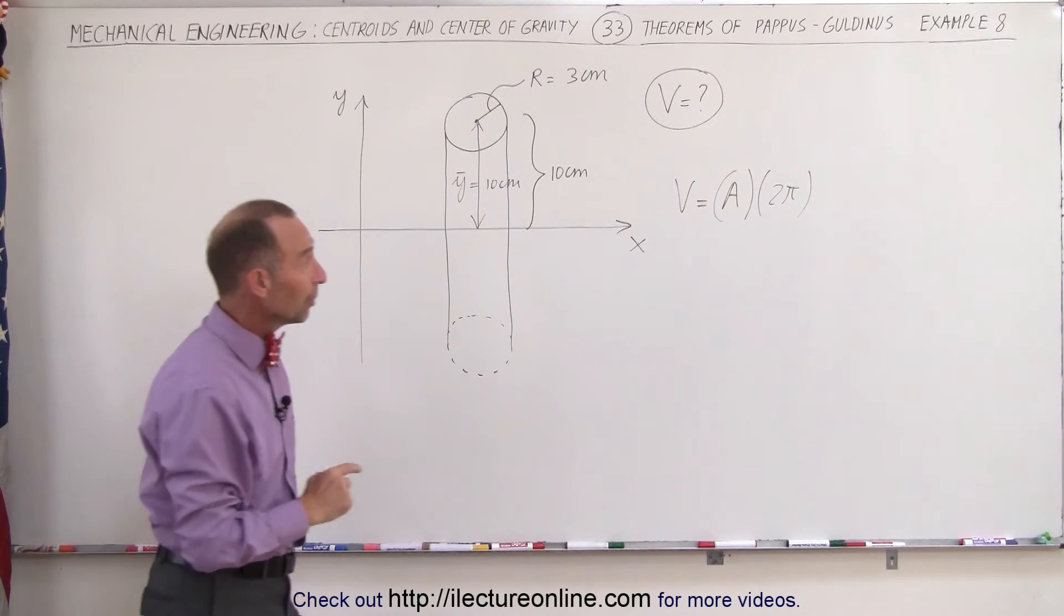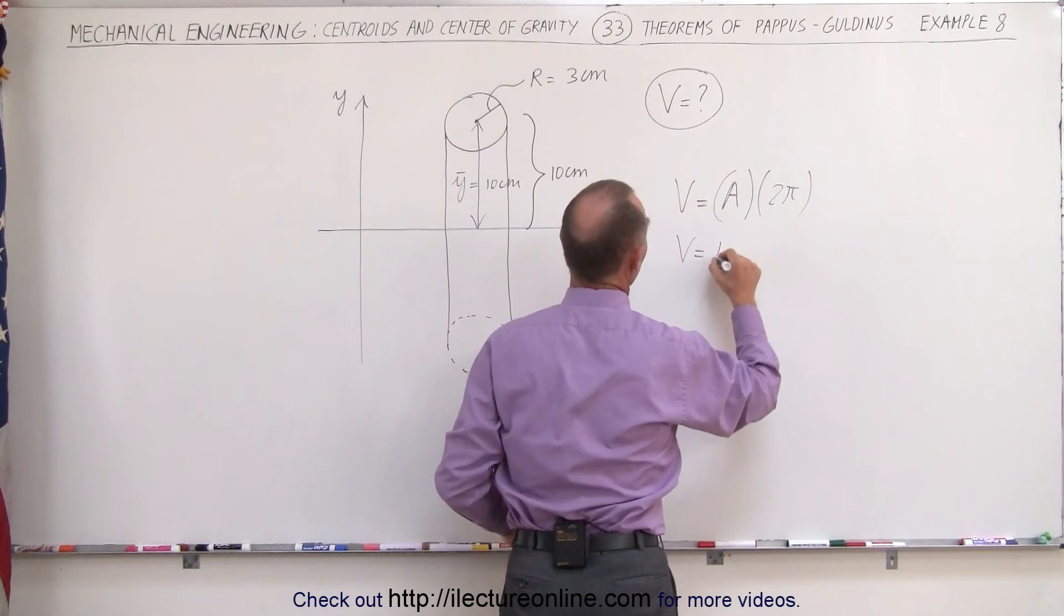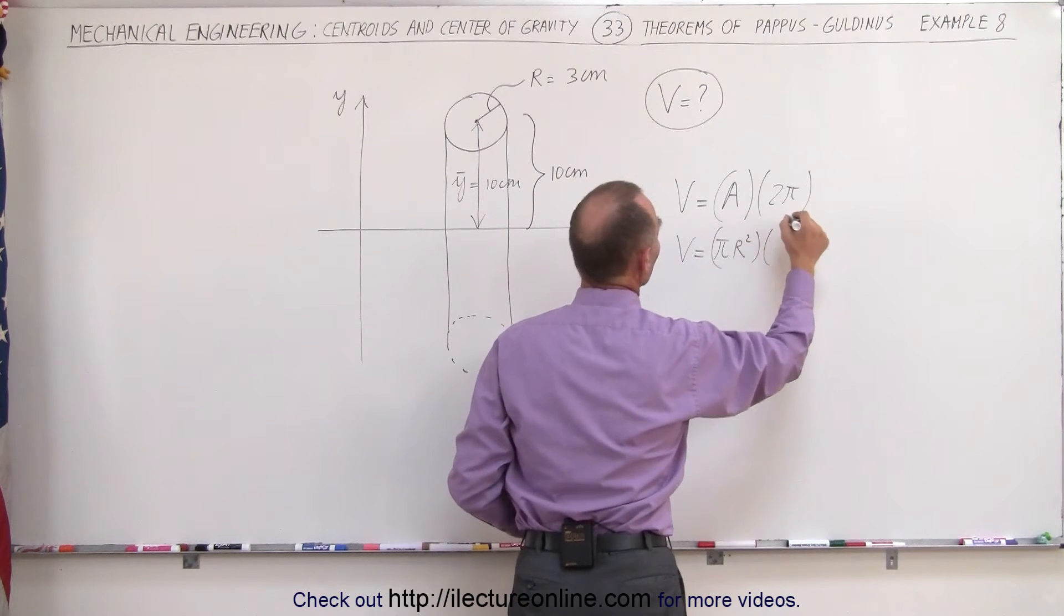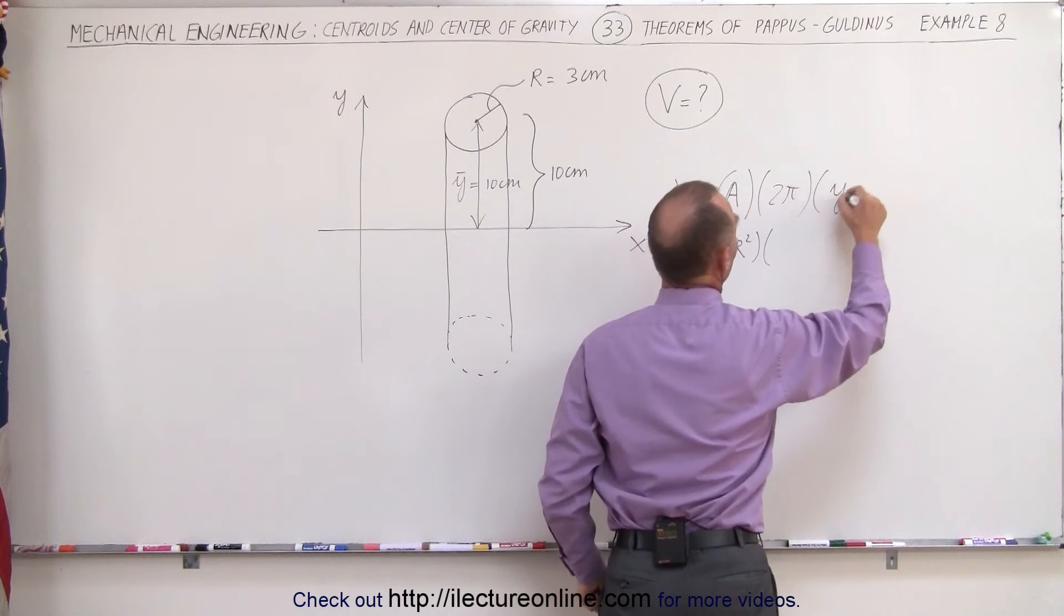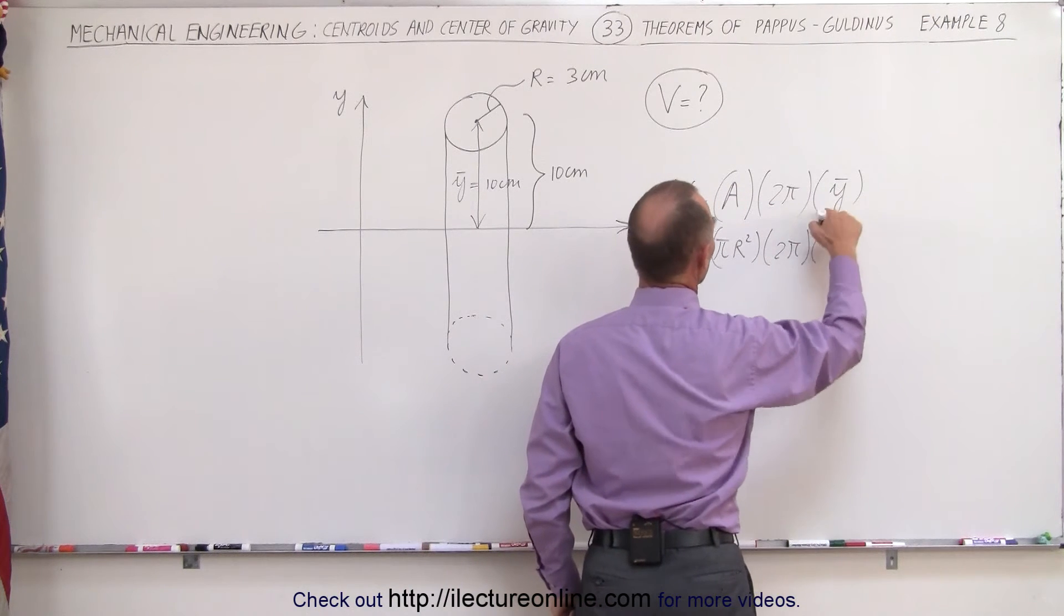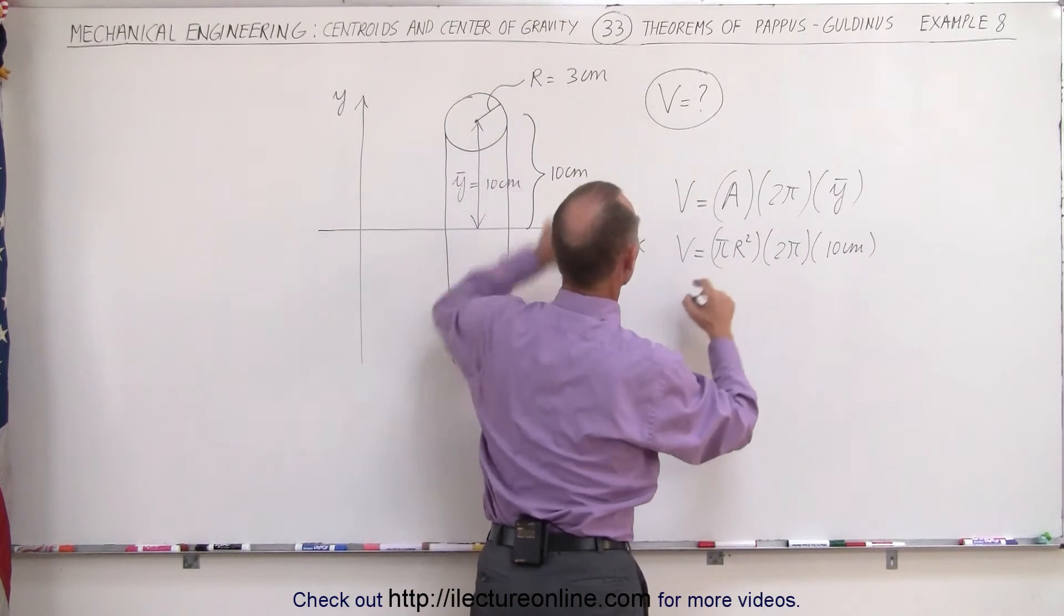Let's now plug in the numbers and see what we get. The volume is equal to the area which is a circle π times the radius squared times the distance traveled, and I'm missing this radius right there, 2π times the radius. In this case the radius is 10 centimeters. The radius here is 3 centimeters.